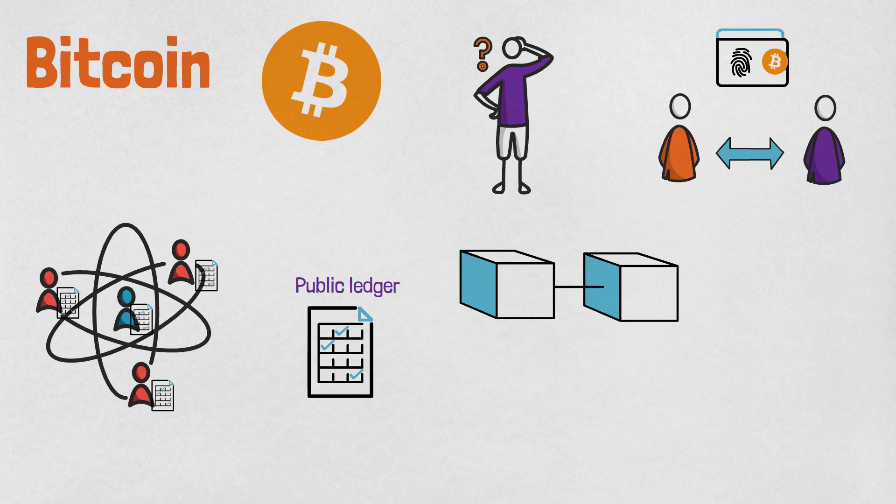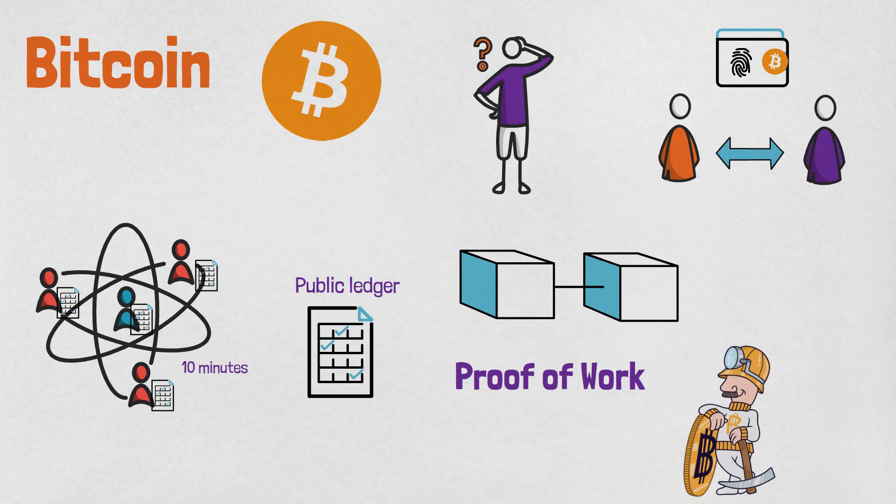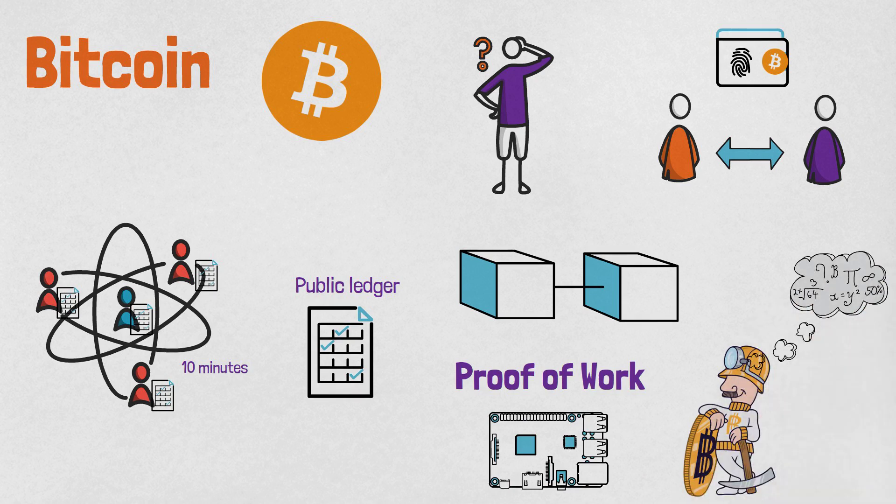The blocks with transaction records are added to the shared ledger roughly every 10 minutes. Every block is verified by Bitcoin miners with the help of a proof-of-work consensus mechanism. Proof-of-work simply requires members of the network to expend processing power to solve mathematical puzzles in order to validate transactions.